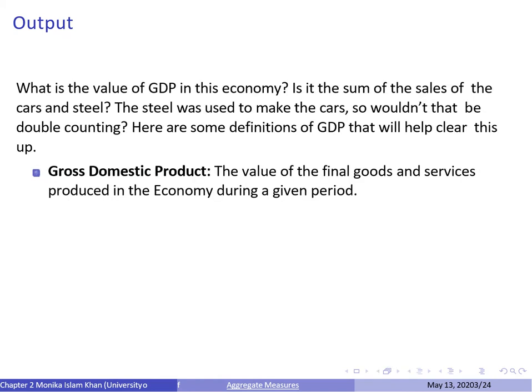In this toy economy, how would we calculate GDP? Would it be the sum of sales of both cars and steel, or just the sales of cars? If the steel was used to make cars, combining them both would be double counting. There are three different definitions of GDP. First, GDP calculates the value of final goods and services produced in an economy in a given period of time. Following this definition, we only include the sale of cars, not steel, since we only count final goods and services.